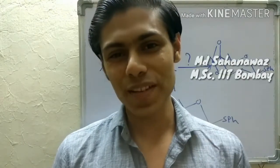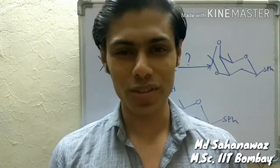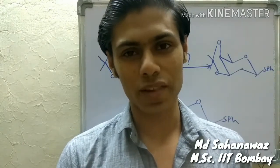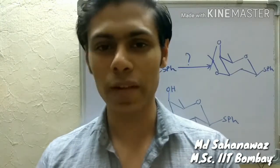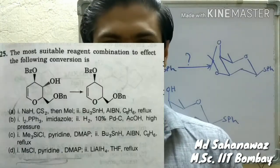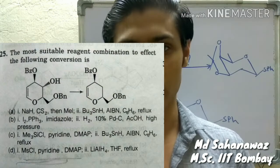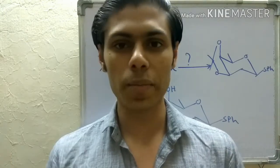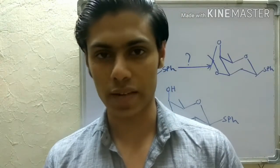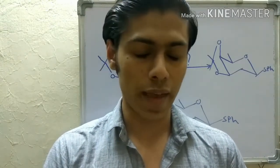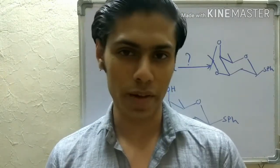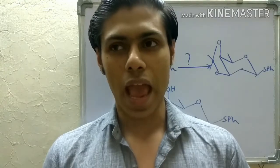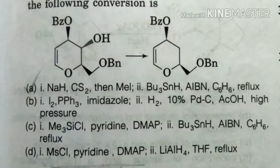Welcome everyone. In this video I am going to discuss a very important name reaction and a problem related to it which came in the GATE exam 2014. Many questions on this particular name reaction also come in the CSIR exam. The reaction is the Barton-McCombie reaction, and this compound is deoxygenated — you have to choose which of the four options is the right answer.